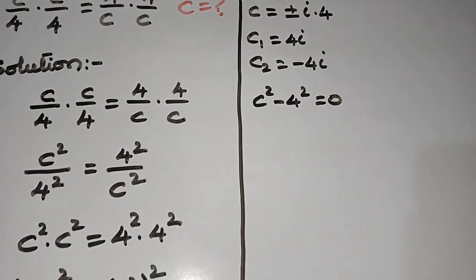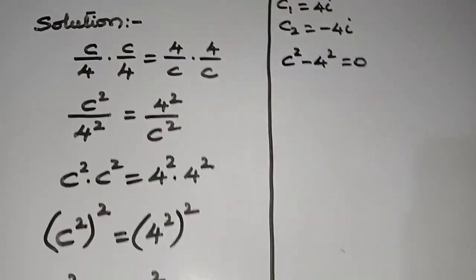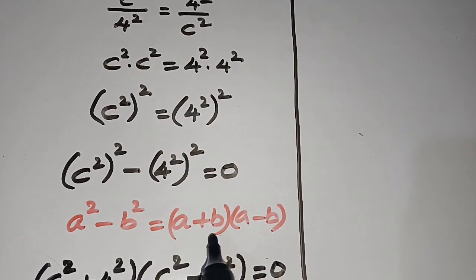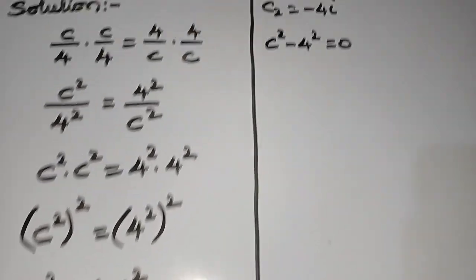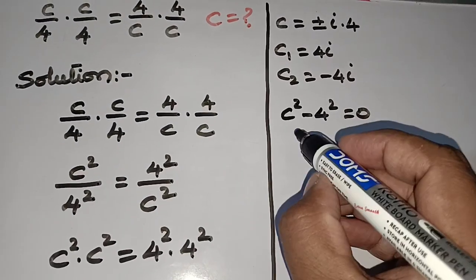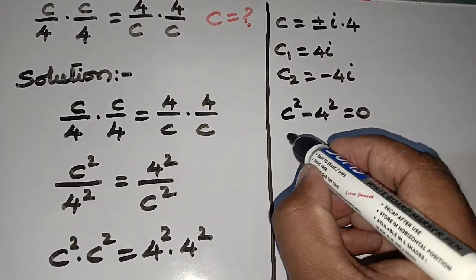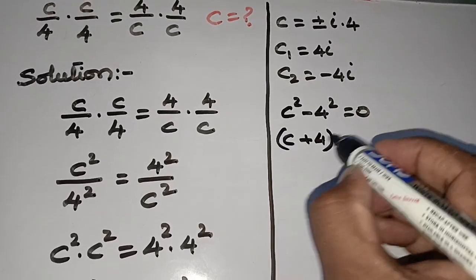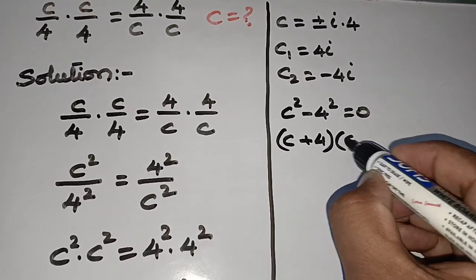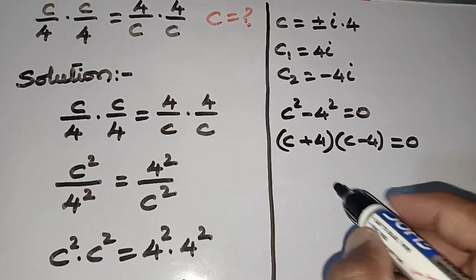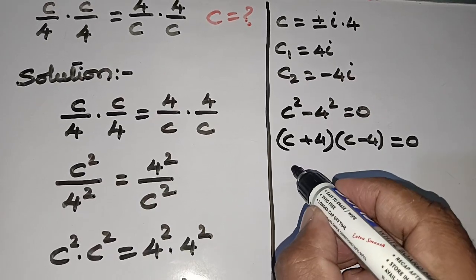Again using the same algebraic identity a² - b² = (a+b)(a-b), so c² - 4² becomes (c + 4)(c - 4) = 0.